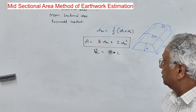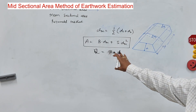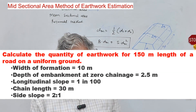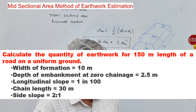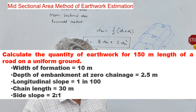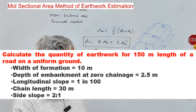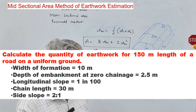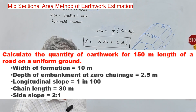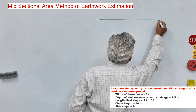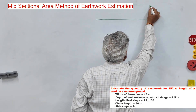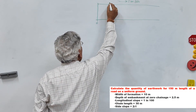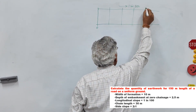Let me take an example to illustrate the calculations. Calculate the quantity of earthwork for 150 meter length of a road on uniform ground. The width of formation is 10 meter. The depth of embankment at the higher end (zero chain) is 2.5 meter. Longitudinal slope is 1 in 100. Chain length is 30 meter and side slope is 2 to 1. The chainages are at 0, 30, 60, 90, 120, and 150 meters.